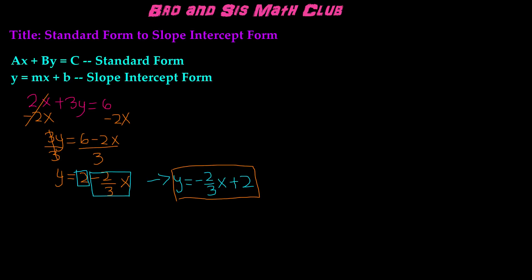Let's go ahead and do another example. Let's say we have 5x minus 4y equals 13. Remember, we're looking for y, so we're going to get rid of the x by using inverse operations. So we have negative 4y equals 13 minus 5x.